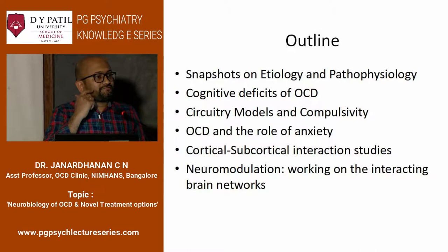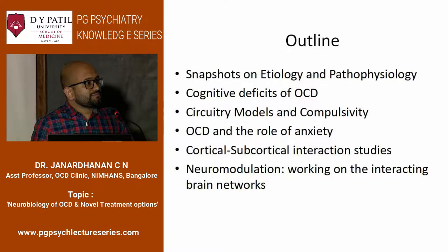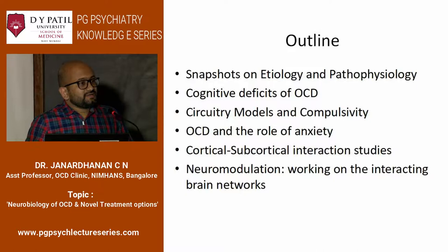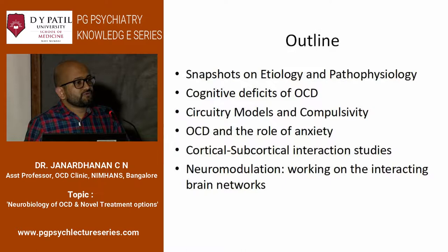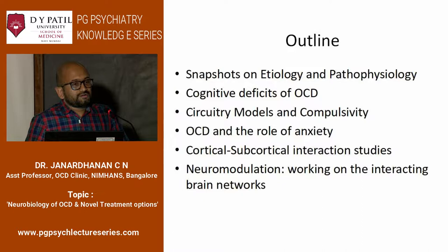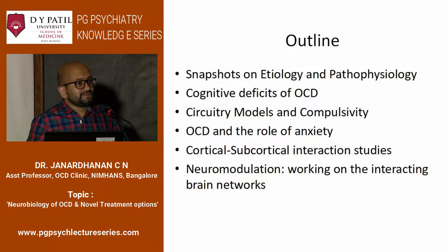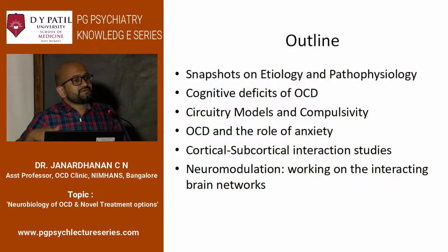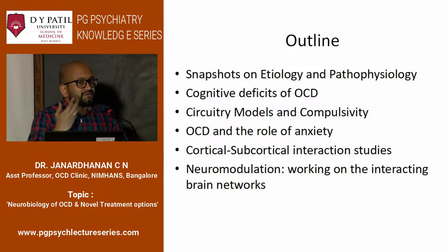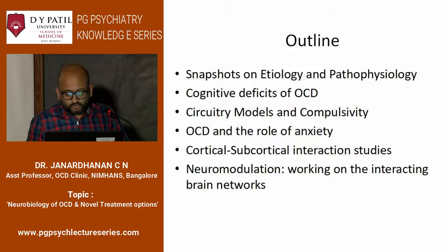This is the outline of what we will discuss today. We will start with snapshots on etiology and pathophysiology of OCD, with specific focus on cognitive deficits which are really important in understanding OCD's neurobiology. Then circuitry models of OCD and how they contribute to understanding compulsivity. We'll address the role of anxiety in OCD, how the circuitry translates into understanding how cortex controls subcortex, and finally neuromodulation — whether we can apply novel clinical strategies from the circuitry model. This is what I'll cover in the next 40 minutes.